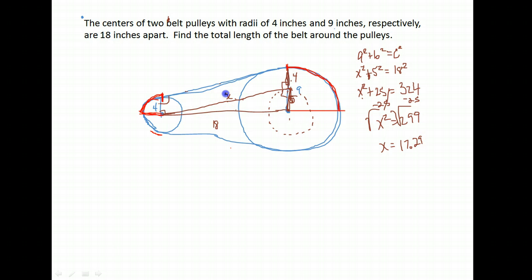So what I found there is this x, 17.29. We created a rectangle here, which makes this length 17.29. So I have one of my distances covered.